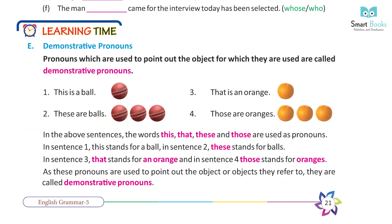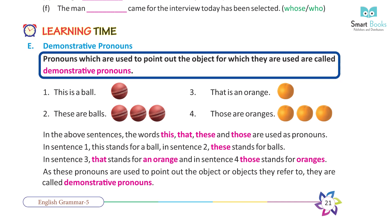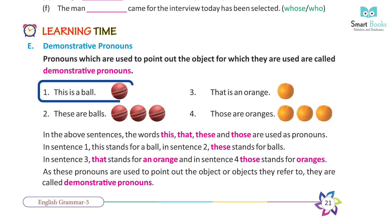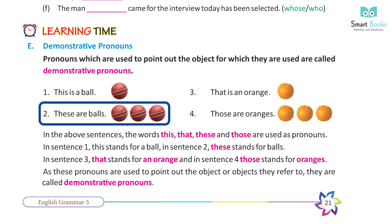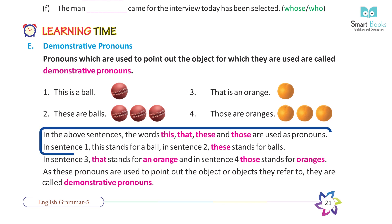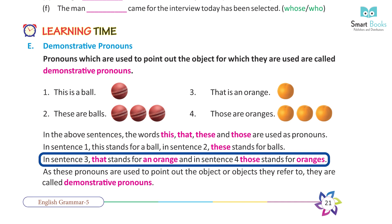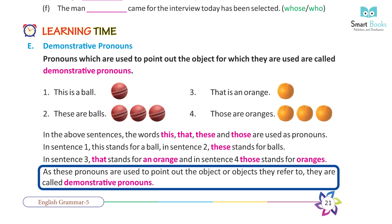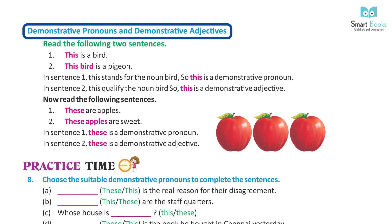Learning time — demonstrative pronouns. Pronouns which are used to point out the object for which they are used are called demonstrative pronouns. Examples: 1 — this is a ball; 2 — these are balls; 3 — that is an orange; 4 — those are oranges. In sentence one, 'this' stands for a ball; in sentence two, 'these' stands for balls; in sentence three, 'that' stands for an orange; in sentence four, 'those' stand for oranges. These pronouns are called demonstrative pronouns.